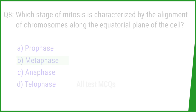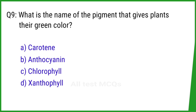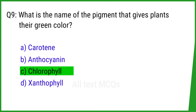Question number 9. What is the name of the pigment that gives plants their green color? The right answer is option C: Chlorophyll.